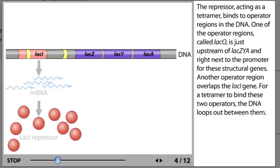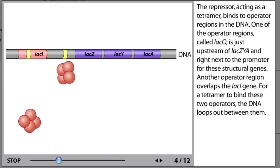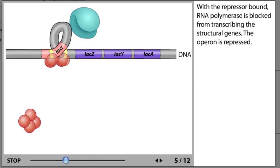The repressor, acting as a tetramer, binds to operator regions in the DNA. One of the operator regions, called lacO, is just upstream of lacZYA and right next to the promoter for these structural genes. Another operator region overlaps the lacI gene. For a tetramer to bind these two operators, the DNA loops out between them. With the repressor bound, RNA polymerase is blocked from transcribing the structural genes. The operon is repressed.